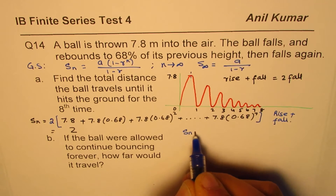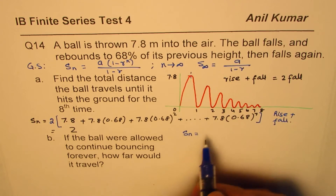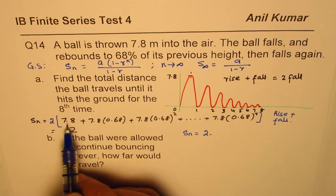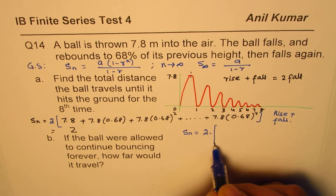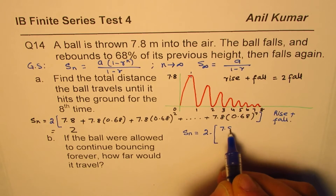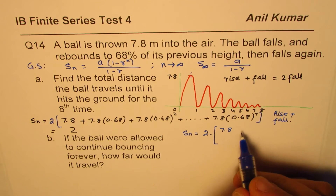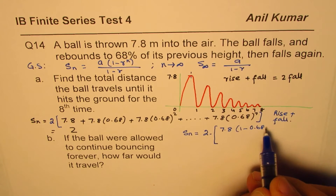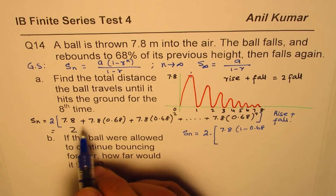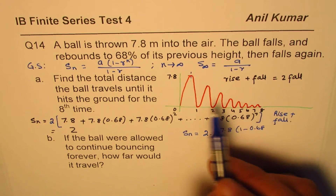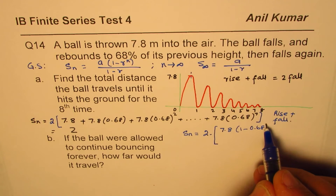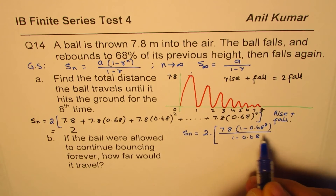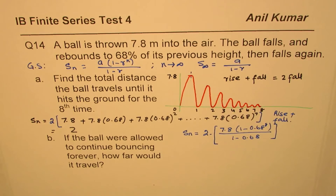So S of N equals two times the sum of the series using the formula. First term is 7.8, times (1 minus r), where r is 0.68, to the power of N. There are eight bounces, so N equals 8. That gives us 7.8 times (1 minus 0.68 to the power of 8), divided by (1 minus 0.68).